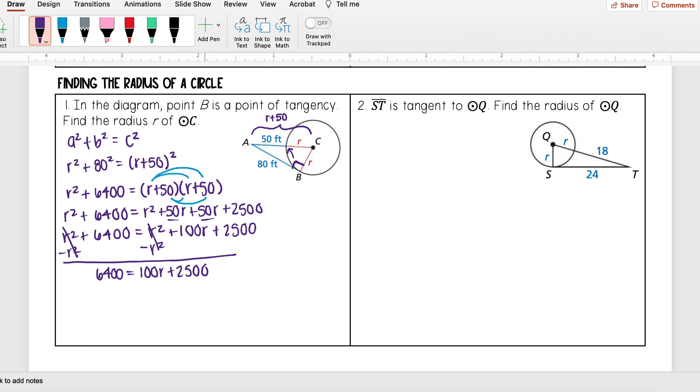Subtract 2500 from both sides, and then 6400 minus 2500, you get 3900. Then divide both sides by 100, and I get that R is equal to 39.